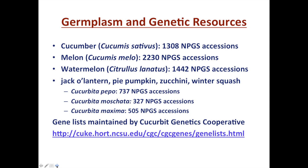One of the great resources we have as we work with these crops is the USDA national plant germplasm system. For instance, cucumber, Cucumis sativus, has over 1,000 accessions. Cucumber is used for everything from fresh market slicing to pickling, commonly in the U.S. Melon, Cucumis melo, has over 2,000 accessions readily available, including cantaloupe, honeydew, and muskmelon — great sources of beta-carotene and some great flavors.